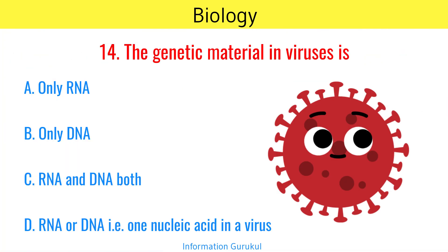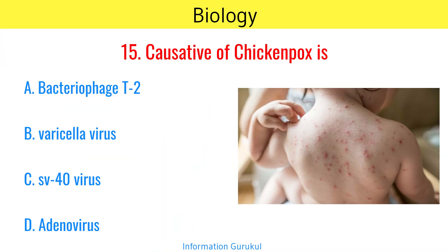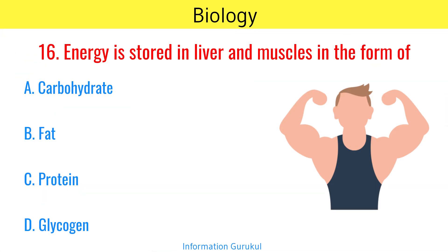The genetic material in viruses is RNA or DNA — that is, one nucleic acid in a virus. Causative of chickenpox is Varicella virus. Energy is stored in liver and muscles in the form of Glycogen.